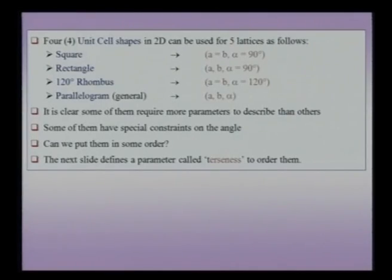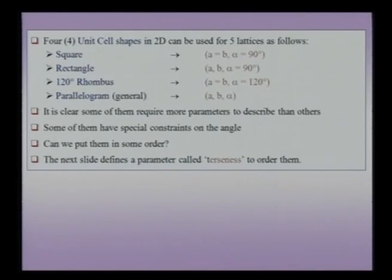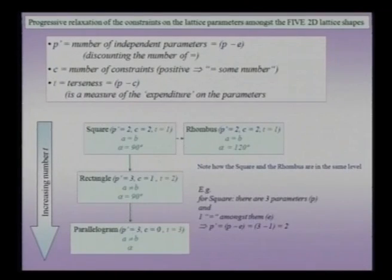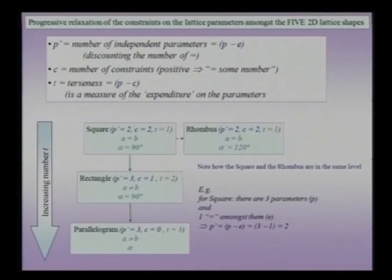There are four typical unit cells which we can use to describe these five lattices in two dimensions: the square, the rectangle, the rhombus, and the general parallelogram. What we did was sort these five possible unit cells in terms of expenditure on parameters. If a unit cell has more expenditure on parameters, it comes lower in the list and is assigned a higher terseness value. If a unit cell is low on expenditure, it is placed higher in the list and has a lower terseness value.